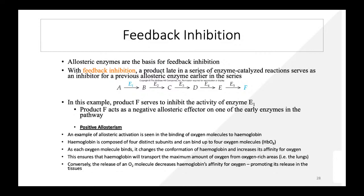Allosteric enzymes are the basis for feedback inhibition. In feedback inhibition, a product late in a series of enzyme-catalyzed reactions serves as an inhibitor for earlier allosteric enzymes. For example, in pathway A → B → C → D → E → F, product F inhibits enzyme E1, slowing the whole reaction. F acts as a negative feedback inhibitor. Positive allosterism is also possible, acting as a positive feedback enhancer.